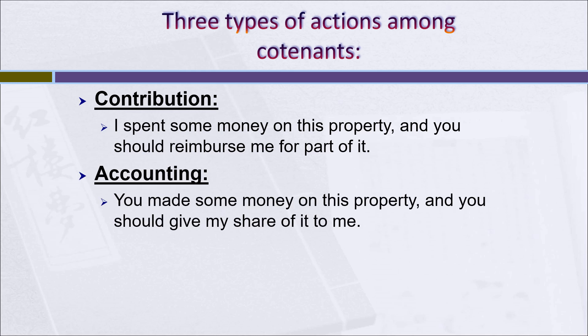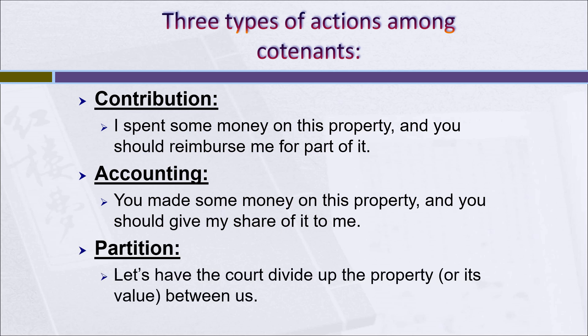The second action is called an accounting. What happens here is that one of the co-tenants says to the other: you made some money on this property, and you should give me my share of the money that you made. The third action is a partition. It says: let's have the court divide up the property, and we'll not be co-tenants anymore — we'll just be neighbors. Or we can have the court sell the property and divide up the money. Either way, that'll be the end of the co-tenancy.